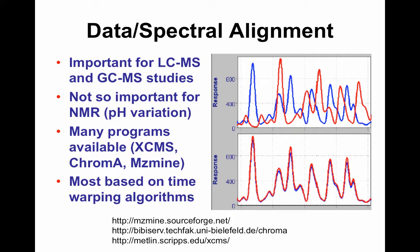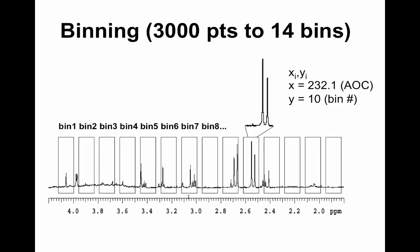Spectral alignment is very important for LC, though less so for GC. In the example shown, two LC runs have a systematic shift that can be corrected by realigning, getting the red to align with the blue. XCMS, MZMine, and Chroma all do this using time warping algorithms. You can also bin samples — an older technique originally due to data storage limitations — by carving up peak-rich spectra into regions such as retention time regions or PPM scale in NMR.